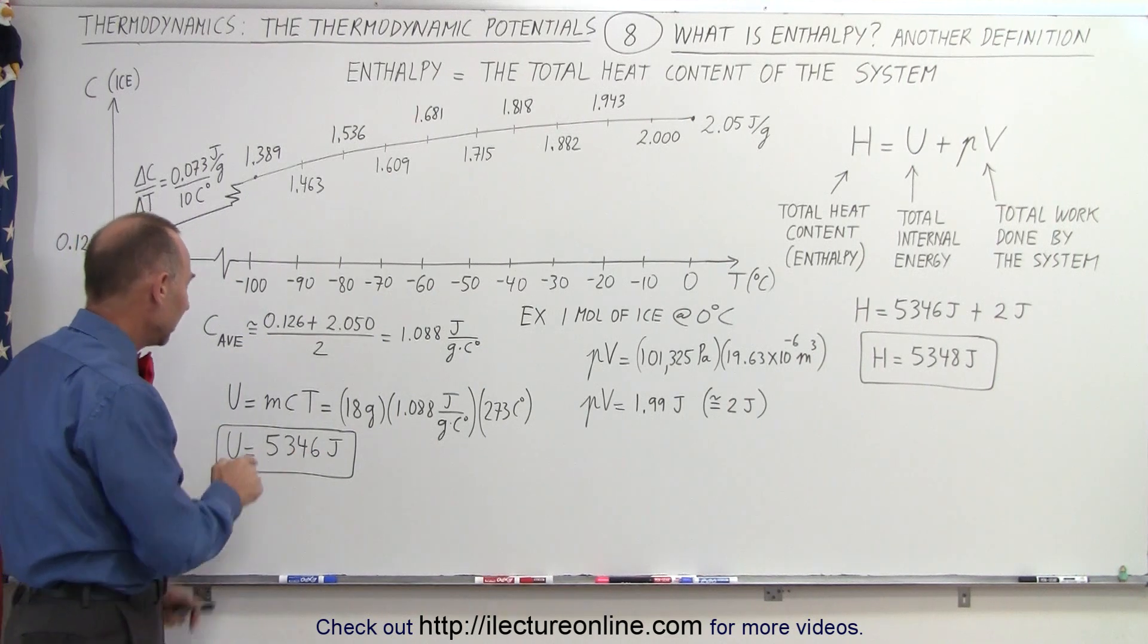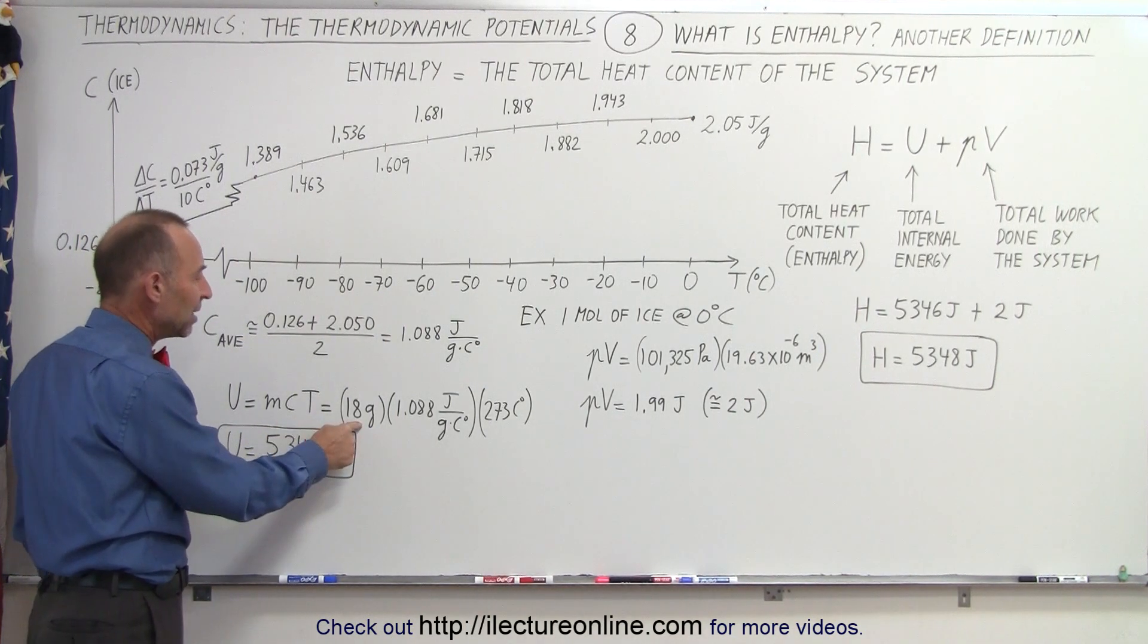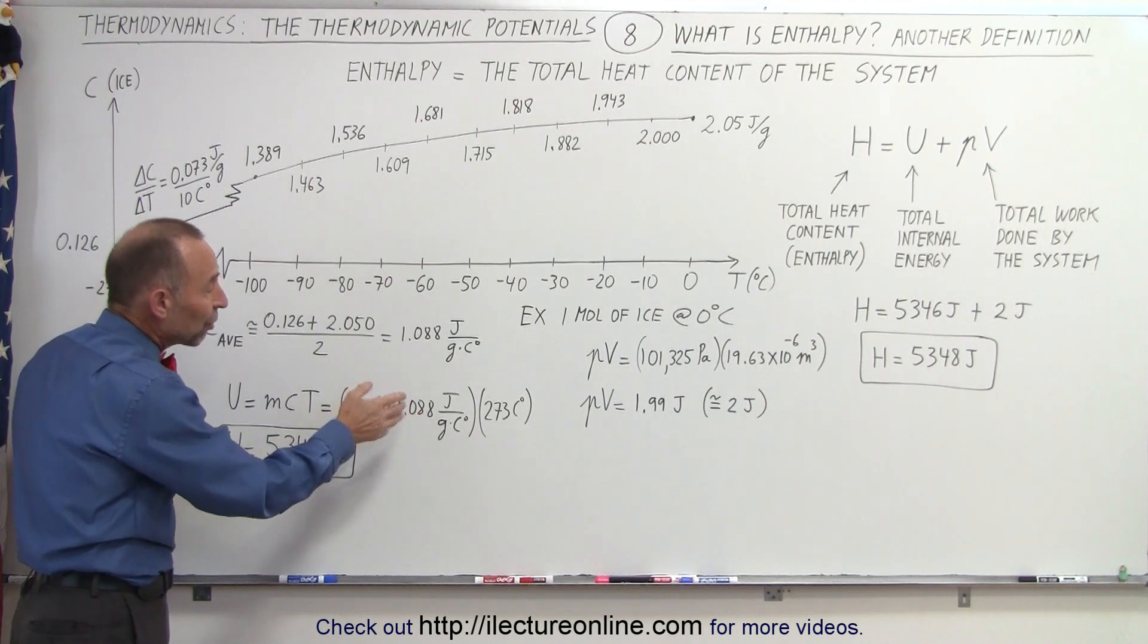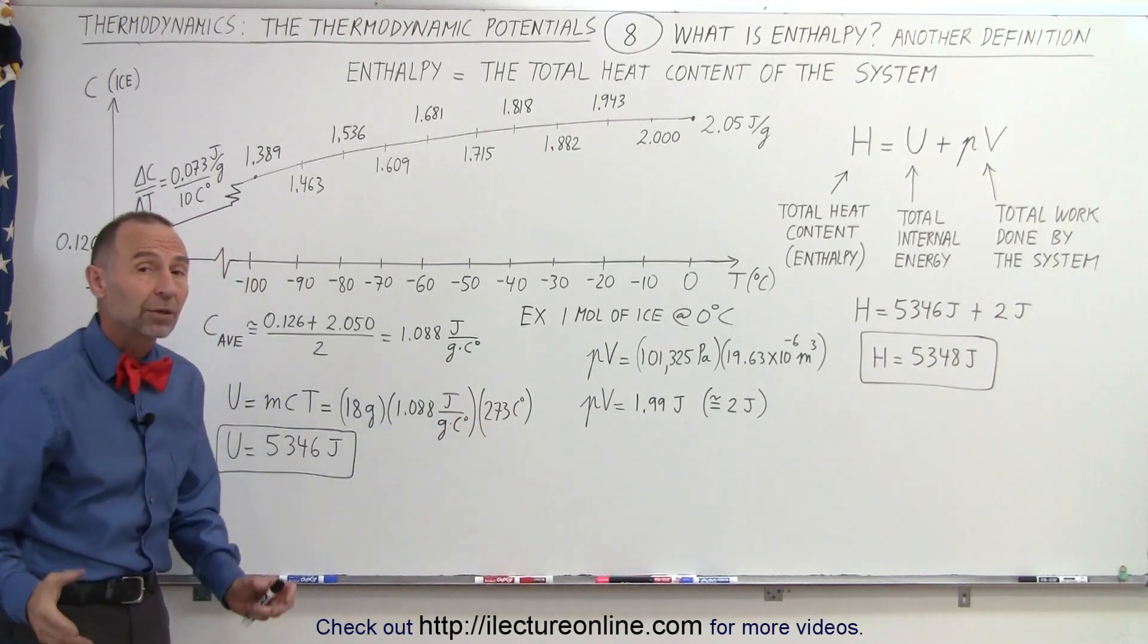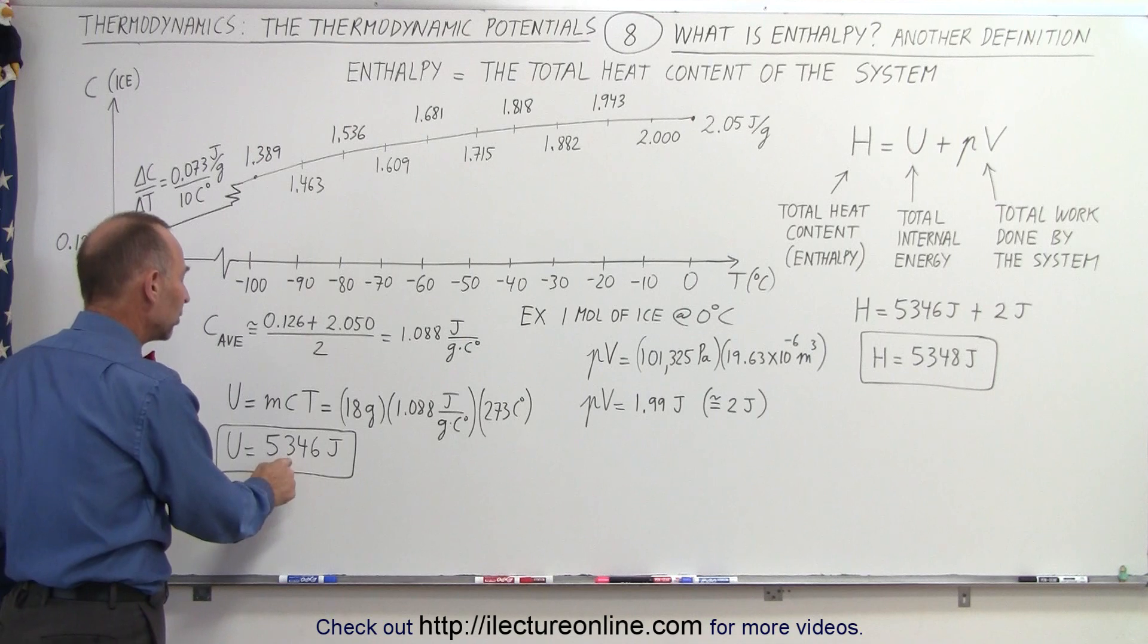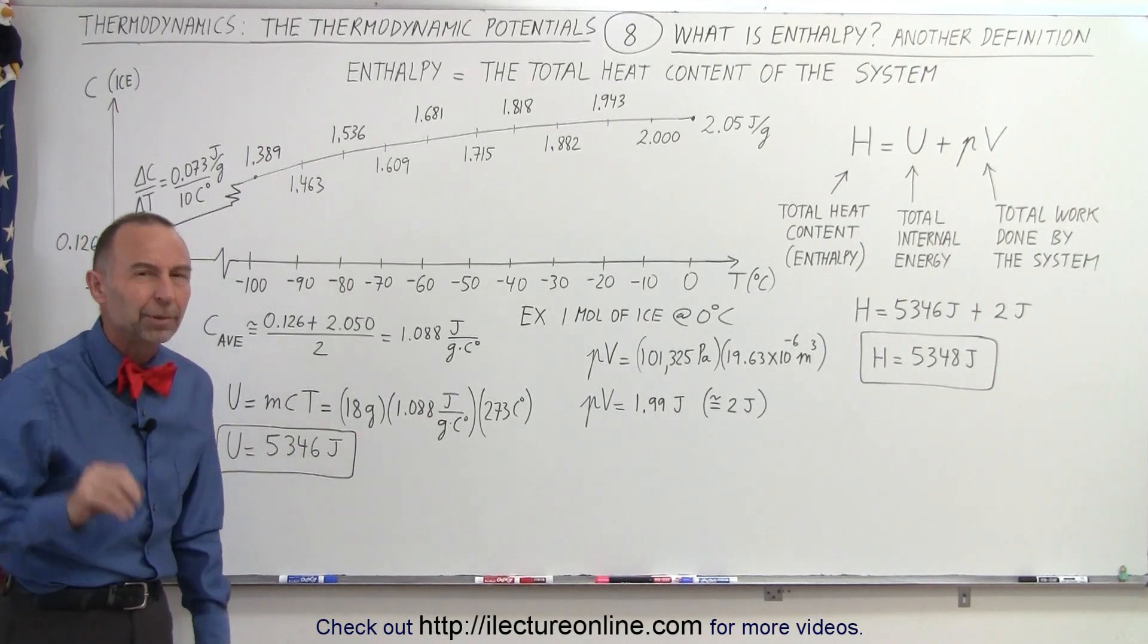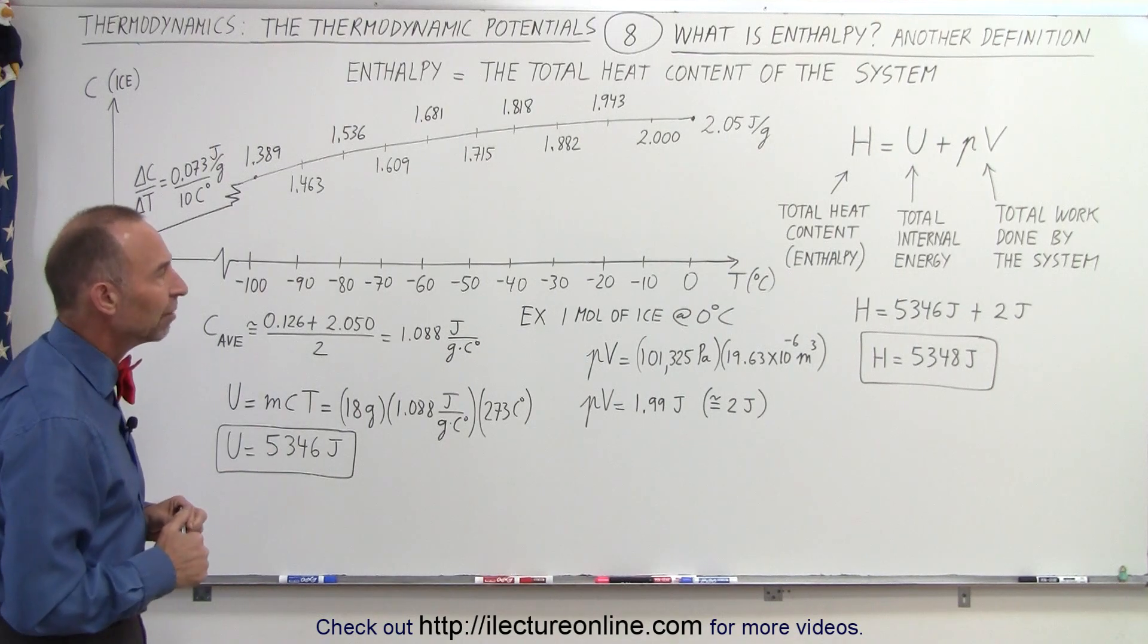If we do that, then the total internal energy is the mass times C times T, which is 18 grams times an average of about 1.1 joules per gram per centigrade degree times 273 centigrade degrees. So the total internal energy is 5346 joules. A little bit different than that, but just for the purpose of illustration, that's good enough.